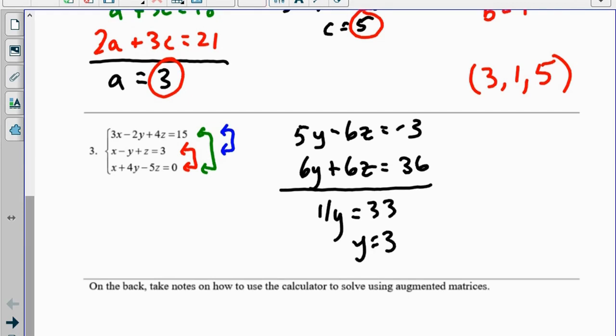So 11y equals 33 and y equals 3. Now let's recall that we move back up the chain. So I'm going to take this y, I'm going to substitute it back in to one of these equations, y equaled 3, so y plus z equals 6, z also equals 3.